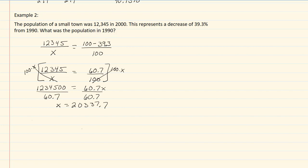Now because we're talking about this being a population and this being people, we don't normally have decimal amounts of people, so I want to round to a whole person, and because this is a 7 we're going to round up, so this will be 20,338 for my population.